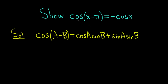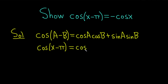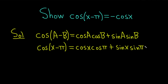Now I'm going to write down the left-hand side of what we're trying to show. We have the cosine of x minus pi. We can identify a with x and b with pi. So it's cosine of x times cosine of pi, plus sine of x times sine of pi.